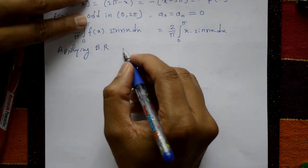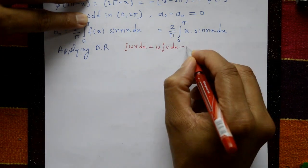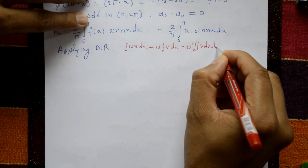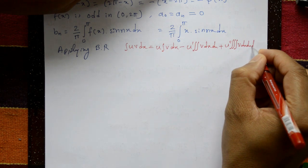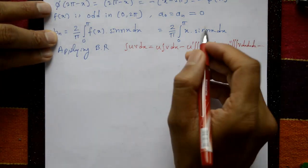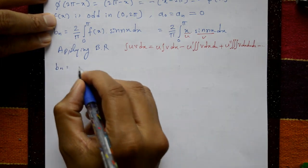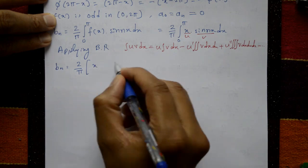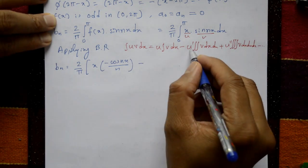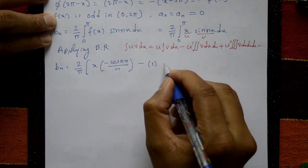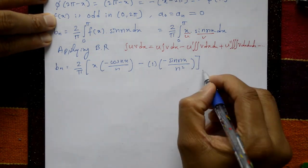Applying Bernoulli's rule — integration by parts. The rule is: integral of u·v dx = u·(integral of v dx) minus u'·(integral of integral of v dx) plus u''·(integral of integral of integral of v dx) minus, and so on. Here u = x and v = sin(nx). The integration of sin(nx) is minus cos(nx)/n. Differentiating u gives 1, and integration of cos(nx) gives sin(nx)/n, making the denominator n squared. The limit runs from 0 to π.